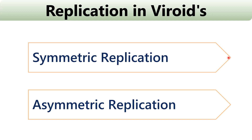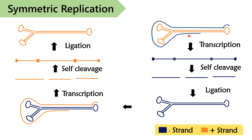In symmetric replication, a minus complementary strand of RNA is formed by using the plus viroid strand as a template strand with the help of RNA polymerase. After that, the linear RNA strand will get cleaved by ribonuclease activity. This monomeric subunit will go through ligation by host RNA ligase and will form a circular minus strand.